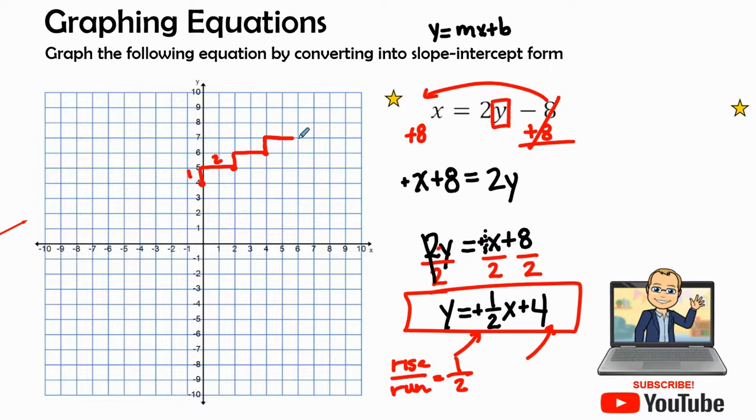We can do it again. Rise 1 and over 2. So ladies and gentlemen, right there, we can connect all those points together. And we have what the linear function or the line that is labeled y equals 1 half x plus 4.